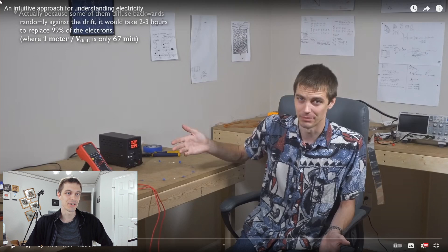This note in the corner of the screen—actually because some of them diffuse backwards randomly against the drift, it would take two to three hours to replace 99% of the electrons—that was a couple hours of work for a footnote. I redid the math a second time and updated that. The first time I said 23 hours, then I went back with slightly better approximations and got two to three hours. From the perspective of physics, they're both on the order of hours, so they're basically the same number. But I want to show you how I got there.